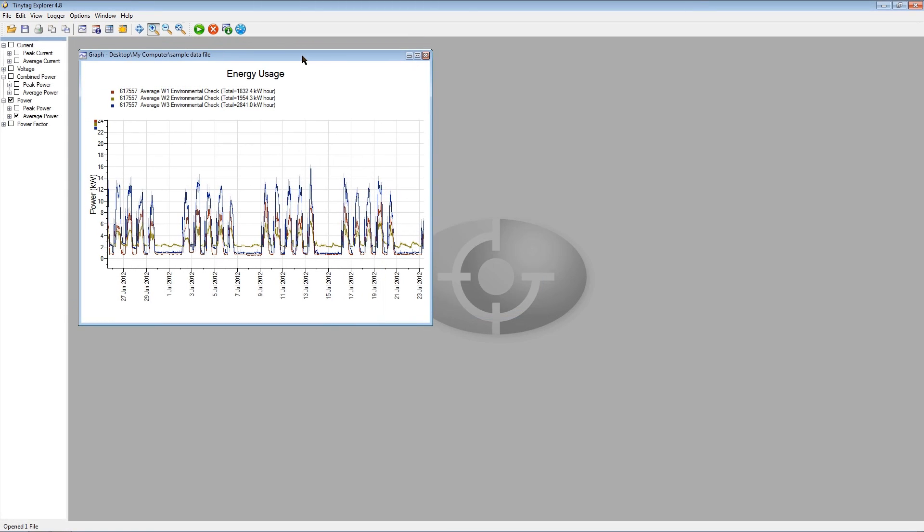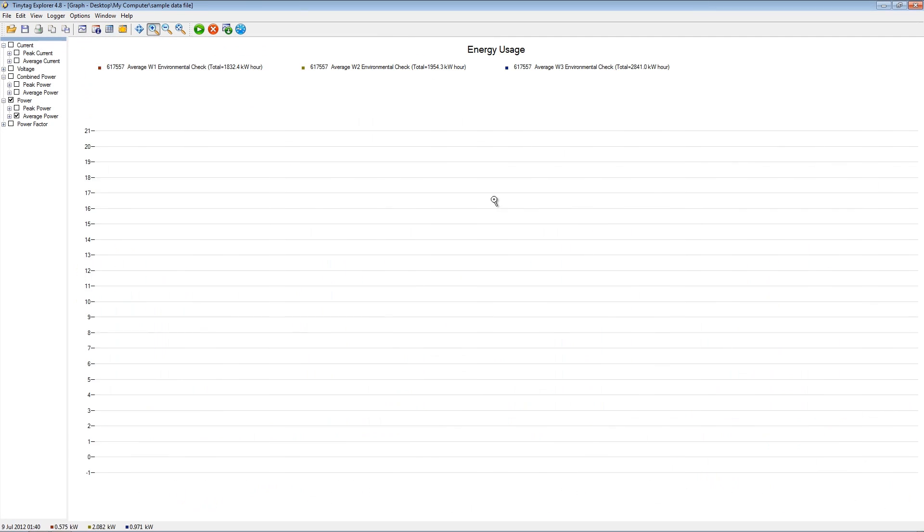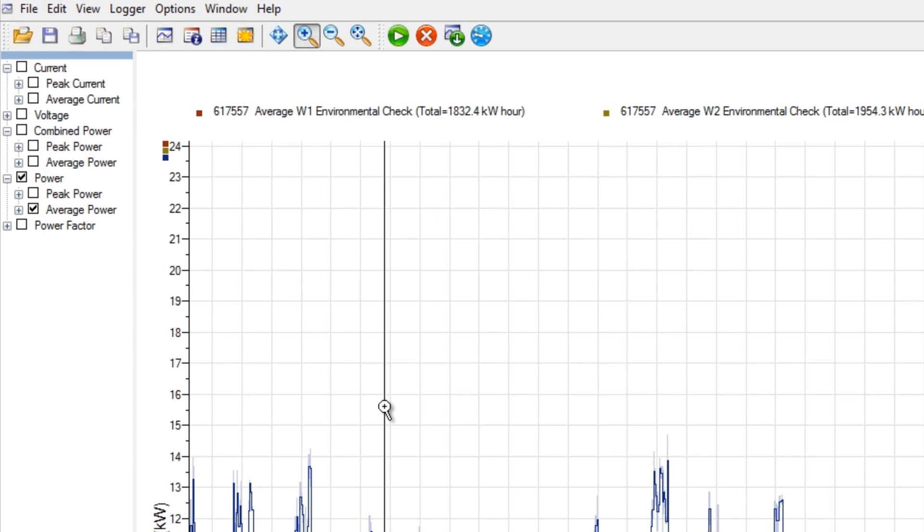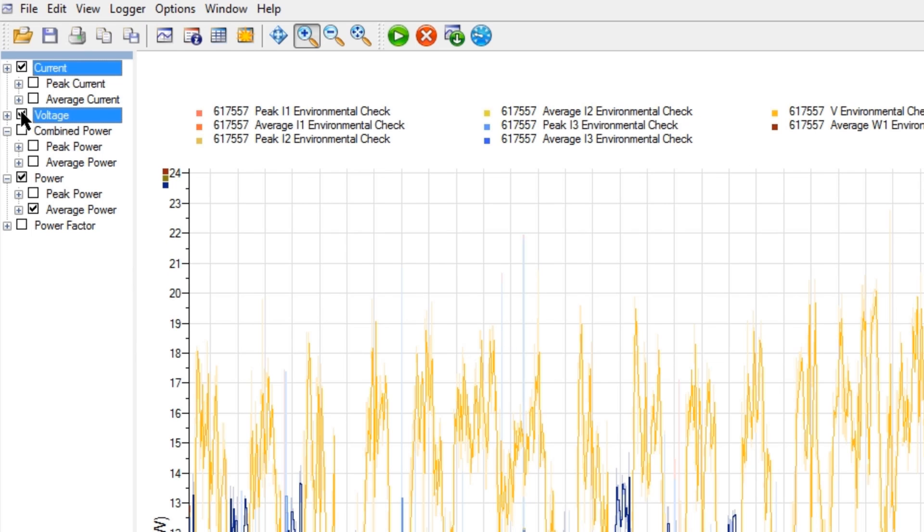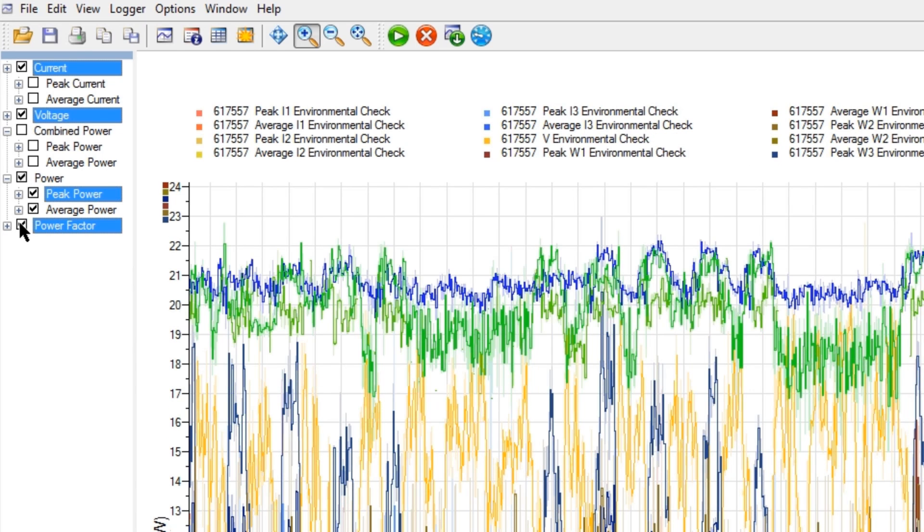On opening a file, the recorded data is clearly illustrated as a graph. The trace selector in TinyTag Explorer enables the properties required for viewing to be selected. For example, current, voltage, power and power factor data.